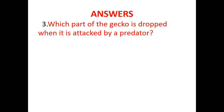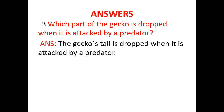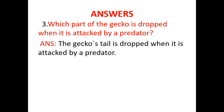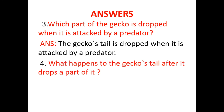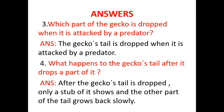Question three: which part of the gecko is dropped when it is attacked by a predator? A predator is an animal that kills and eats other animals. The gecko's tail is dropped when it is attacked by a predator. Question four: what happens to the gecko's tail after it drops? Only a stub of it shows, and another part of the tail grows back slowly.